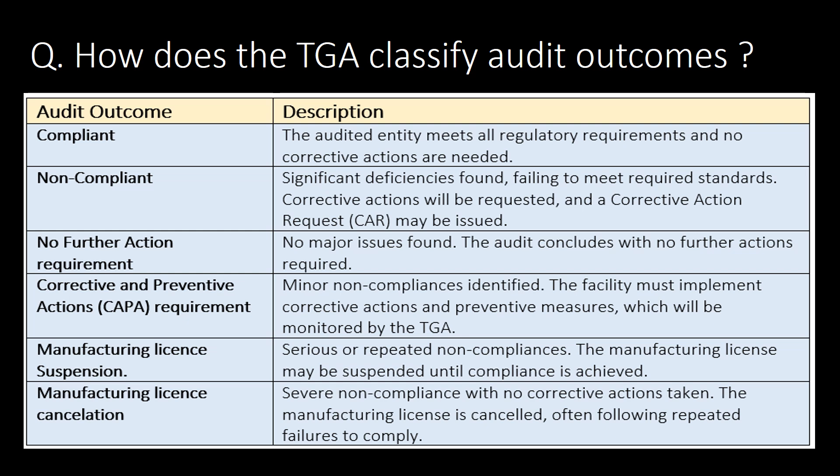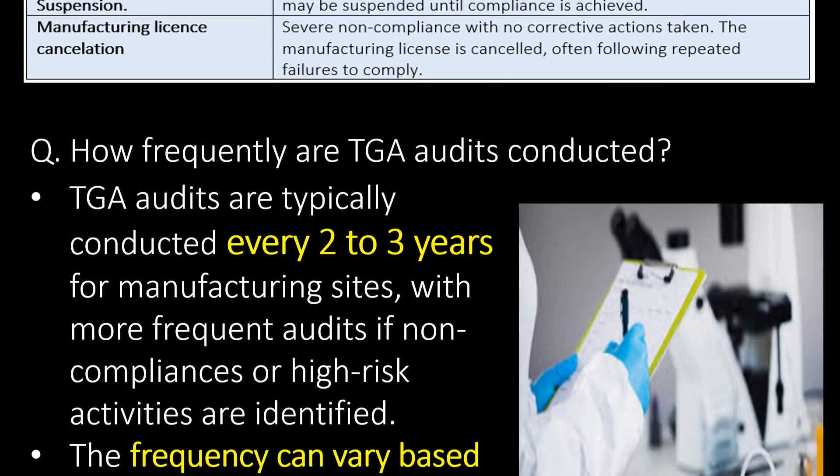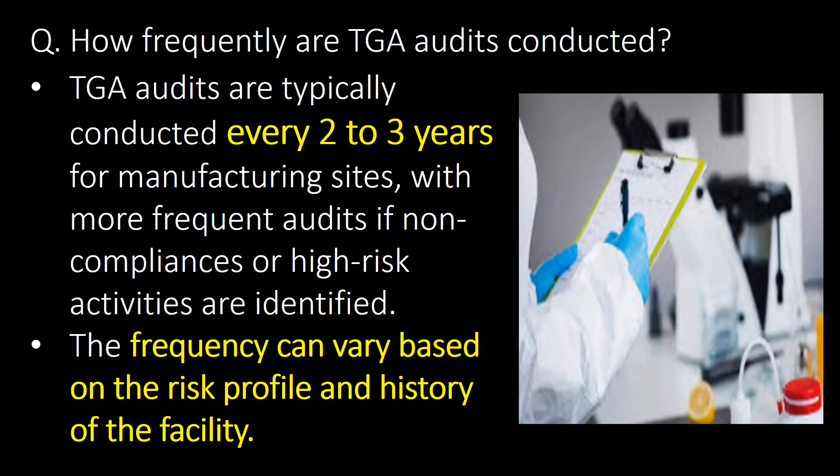How does the TGA classify audit outcomes? TGA majorly classifies their audit outcomes in the following six ways: compliant, non-compliant, no further action required, CAPA — that is Corrective and Preventive Action — requirement, manufacturing license suspension, and manufacturing license cancellation.